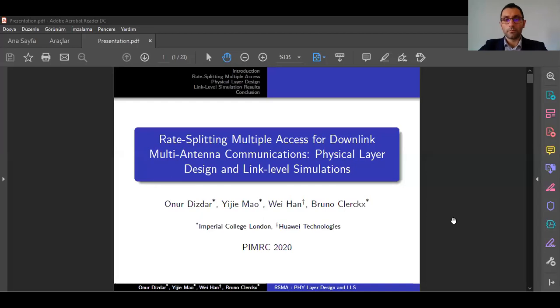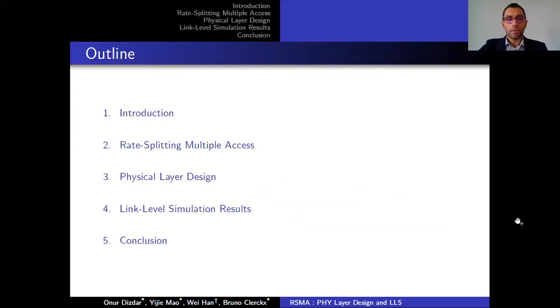Hello everyone, I'm Honor Desire from Imperial College Alumni. Today I'm going to present our work titled 'Rate-Splitting Multiple Access for Downlink Multi-Antenna Communications: Physical Layer Design and Link Level Simulations.' I will first start with a brief introduction and some background information on rate-splitting multiple access, then give the physical layer design and the link level simulation results.